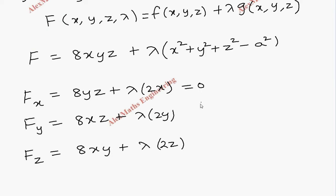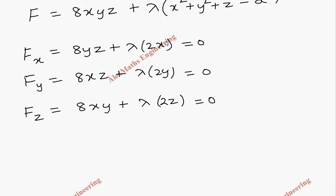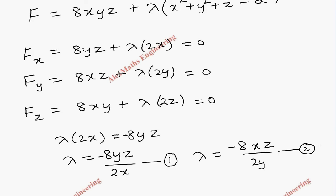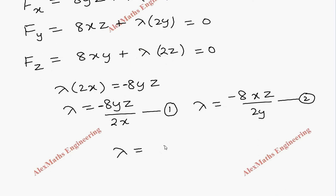As per the working procedure we equate each partial derivative to zero. From the first equation, λ(2x) = −8yz, so λ = −8yz/(2x). From the second equation, λ = −8xz/(2y). From the third equation, λ = −8xy/(2z).